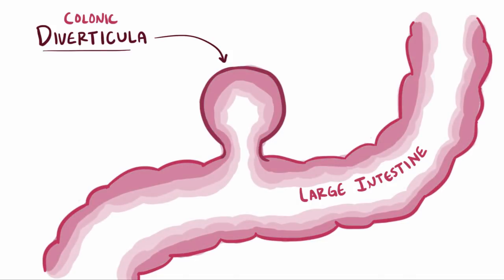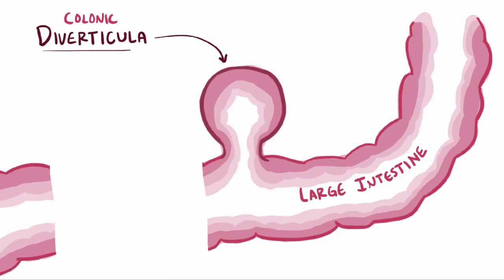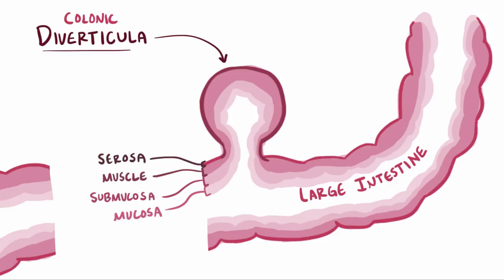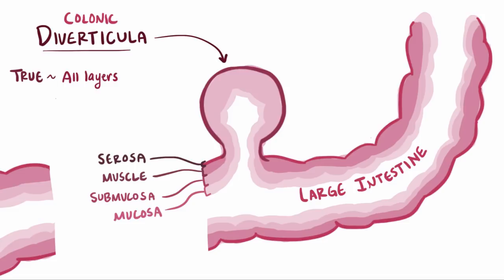The walls of the large intestine are made up of several layers, starting with the inner layer, the mucosa, then the submucosa, then the muscle layer, and finally the serosa. Sometimes these little pouches include all the layers from mucosa to serosa, and these are called true diverticula. Sometimes only the mucosa and submucosa poke through the muscle layer, and these would be called pseudo or false diverticula, where the muscle layer isn't included and the mucosa and submucosa are covered only by serosa.